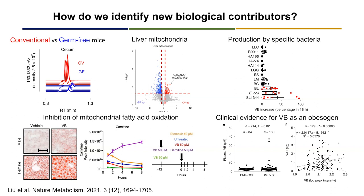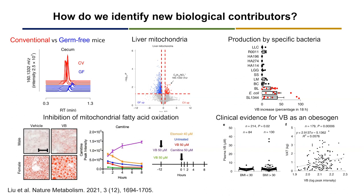We later detected this chemical in humans, and found that valerobetaine — we call it VB — is strongly associated with obesity in humans and also strongly associated with visceral fat. It is clearly an obesogen: it causes obesity or promotes disruptions in fatty acid oxidation and causes increased deposition of lipid.